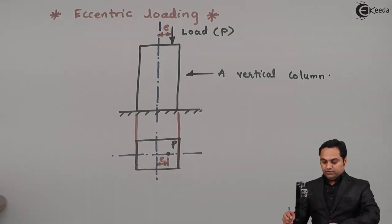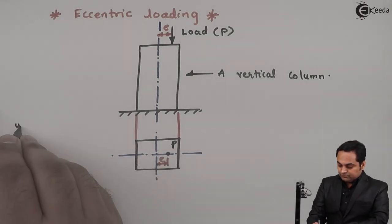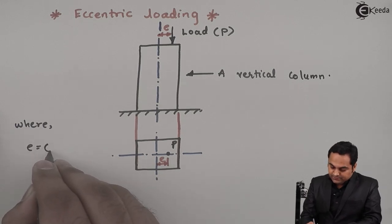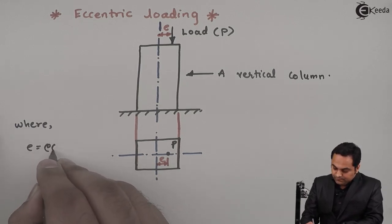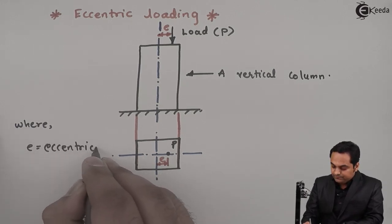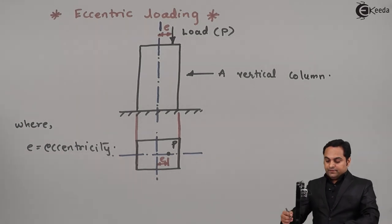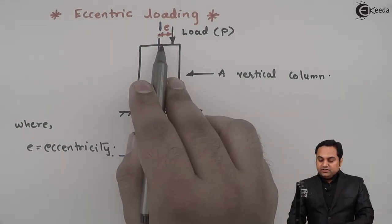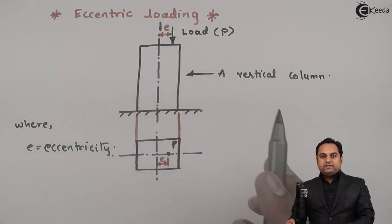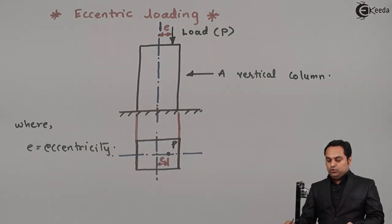The distance e is called as eccentricity. As the load is away from the axis, it is called as eccentric load.